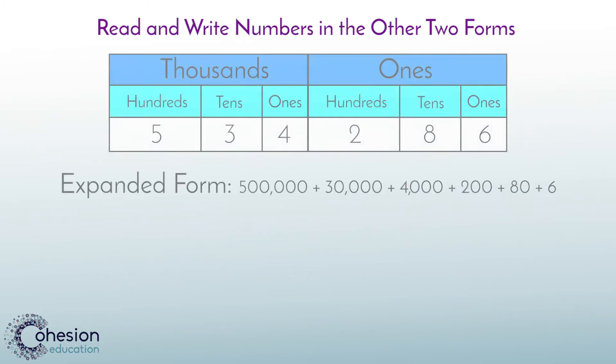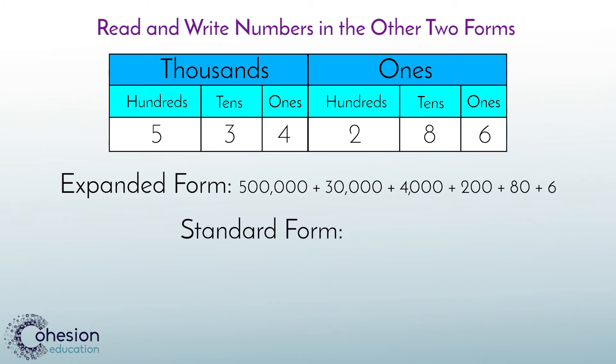To convert from expanded to standard form, again because working in standard is convenient, place the non-zero digits in the correct place. 5 is in the 100,000th. 3 is in the 10,000th. 4 is in the thousands. 2 is in the hundreds. 8 is in the tens. 6 is in the ones. 534,286.